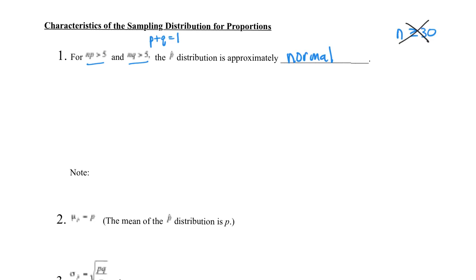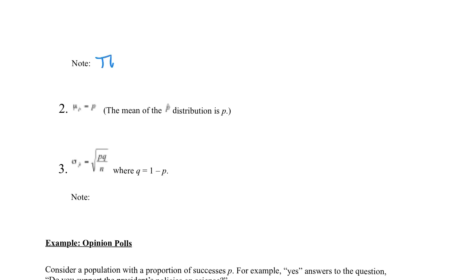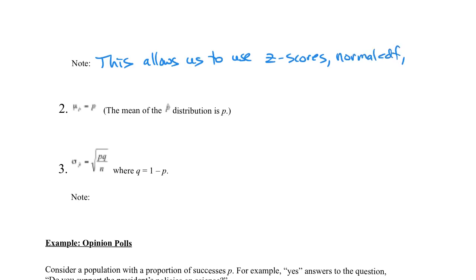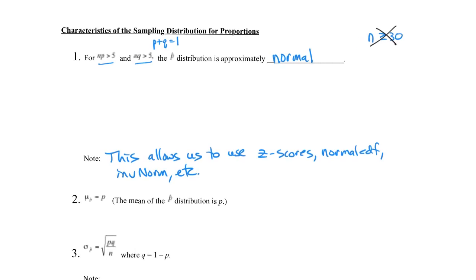As long as these two conditions are met, the p-hat distribution is approximately normal, which is important because then we can use everything we learned in Chapter 6: z-scores, normal CDF, inverse norm, and more. If we know p-hat is normal, we can do all kinds of things with p-hat and make inferences back about p, the population proportion.